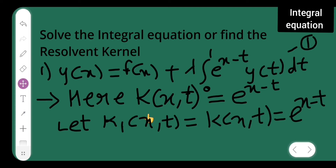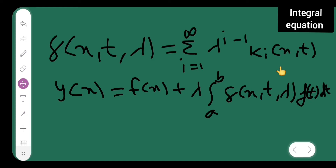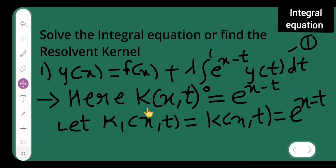Now what we need to do is find the resolvent kernel. This is the formula to find the resolvent kernel. Once you get the resolvent kernel, substitute it and get the answer y(x). Now let us start with the problem. My kernel k(x,t) = e^(x−t).